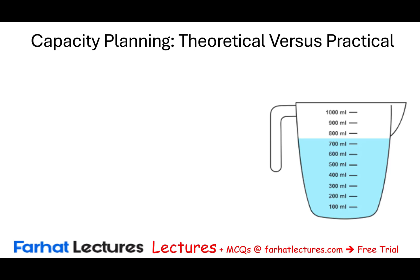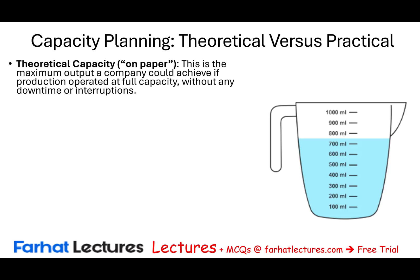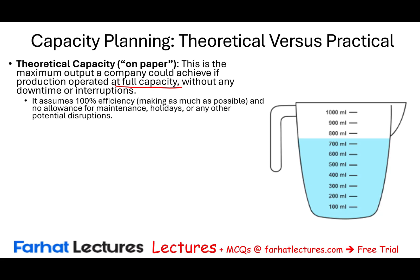Starting with theoretical capacity. Theoretical capacity is the capacity that's on paper — what you theoretically can do. This is the maximum output a company can achieve if production operated at full capacity without any downtime or interruption. It assumes 100% efficiency, making as much as possible with no allowance for maintenance, holidays, or any other potential disruption.